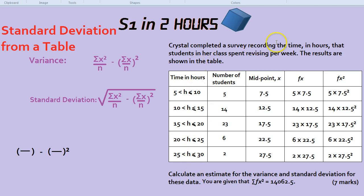Crystal completed a survey recording the time in hours that students in her class spent revising per week. The results are shown in the table. Calculate an estimate for the variance and standard deviation for these data. You are given that the sum of fx² is 14,062.5 for 7 marks.